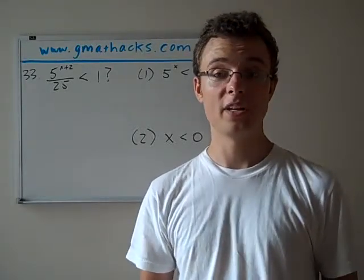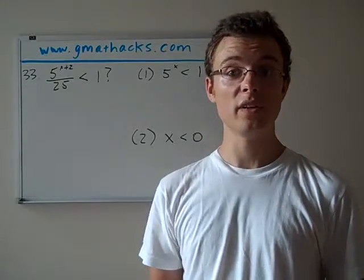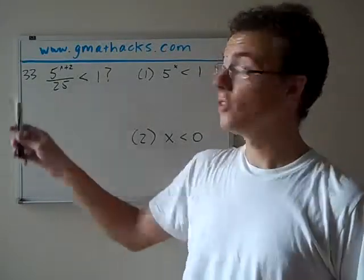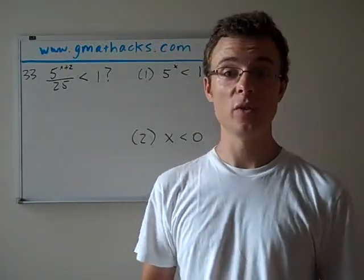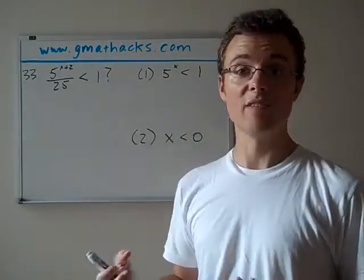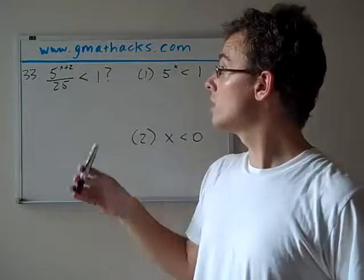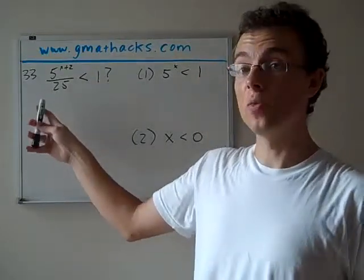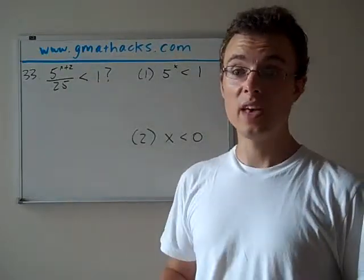It's the data sufficiency section on page 25. So if you want to read along with us in the official guide, we're looking at question 33. It's a data sufficiency question. And more specifically, it's a yes or no question. We're not looking for the specific value of a variable. What we're looking for instead is to figure out whether something is true.